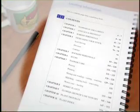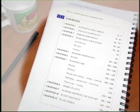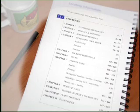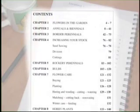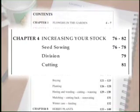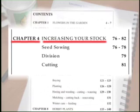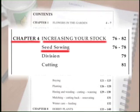Last week we looked at finding information in the contents page of a magazine. Let's have a closer look this week at scanning quickly through a lot of information. This contents page, taken from page 54 of the workbook, is divided into chapters, main headings and subheadings, which give more detailed information about what's in each chapter.